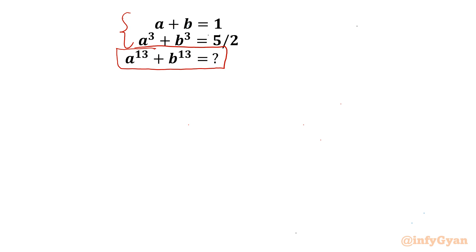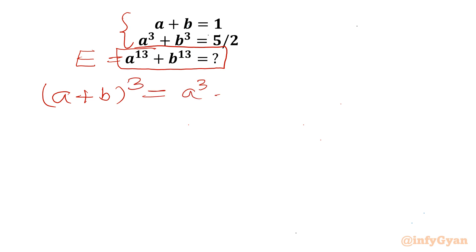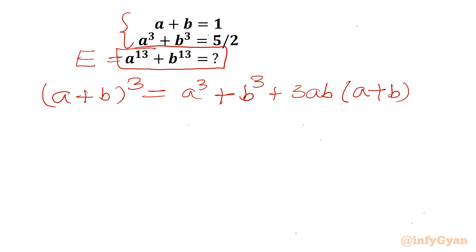Let us call this expression equal to E. Now I will begin with one algebraic identity — it is a plus b whole cube. This formula is a cube plus b cube plus 3ab in bracket a plus b. Now we know the value of a plus b, we know the value of a cube plus b cube. Let us apply.